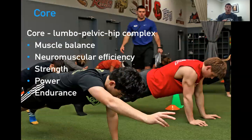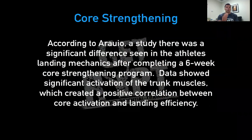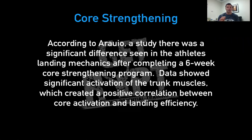With the core, also known as the lumbopelvic hip complex, we have to make sure that we're training muscle balance, neuromuscular efficiency, strength, power, and endurance. With core strengthening, according to the study, there were significant differences seen in athletes' landing mechanics after completing a six-week core strengthening program. Data showed significant activation in trunk muscles, which creates a positive correlation between core activation and landing efficiency.